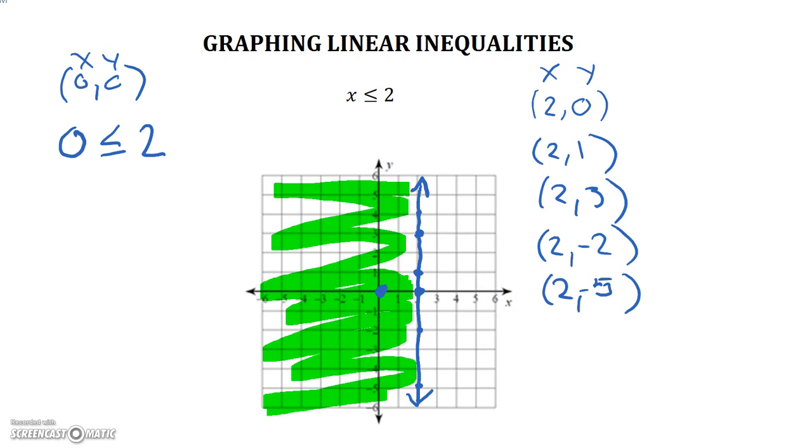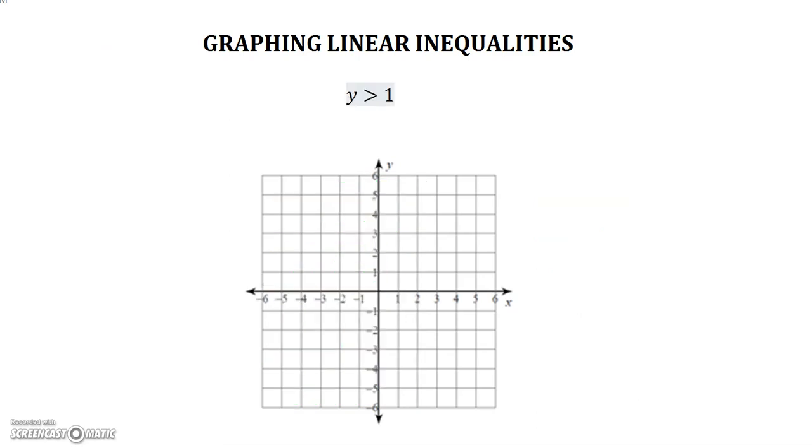Let's go on to the next one. In this one we have y is greater than 1. Now we'll see this in the opposite way of the x. Because it's y is greater than 1, it's going to be on the y axis, and it's going to be horizontal.